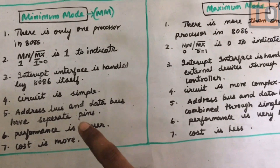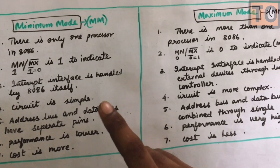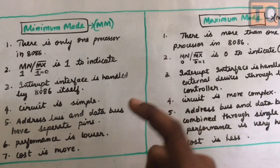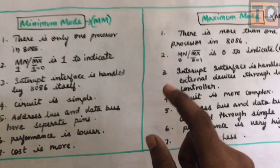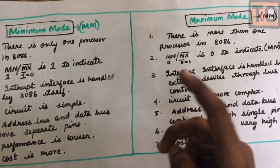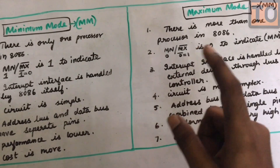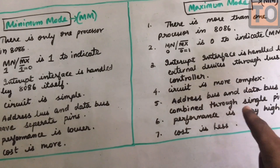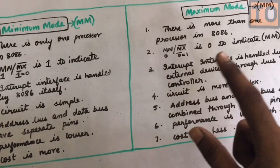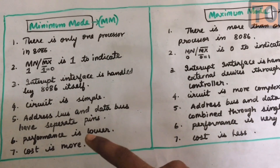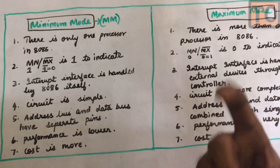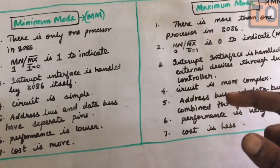Performance is lower in minimum mode and very high in maximum mode. With only one processor, performance speed is low. With multiple processors you get high performance speed. Minimum mode costs more, while maximum mode costs less.